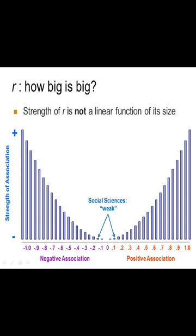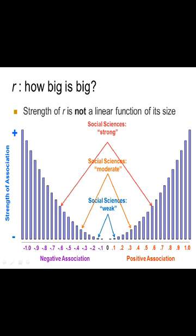Now in the social sciences, sometimes people use this kind of convention, like a 0.1-ish association is weak, and when you get up to like 0.3, 0.35, sometimes 0.4, we say that's moderate. And then we'll take something that's 0.6 and say that's strong.